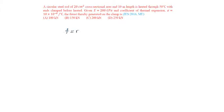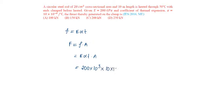Stress is given as EαT. Force or thrust is given as stress into area, which is equal to EαT into area. That is equal to 200 into 10 power 3 megapascals into alpha 10 into 10 power minus 6 into temperature change 50 degree centigrade into cross section area 20 into 10 square mm square, which will be equal to 200 kilonewton. Option C.